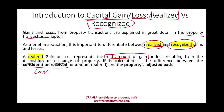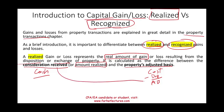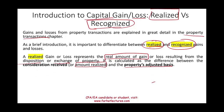The realized gain or loss is computed by taking the difference between consideration received — usually cash, though it could be property or another asset at fair value — and the property's adjusted basis. The adjusted basis is typically cost minus any depreciation taken. So the formula is: amount realized minus the adjusted basis of the property. This is step one — figuring out whether you realized a gain or a loss.